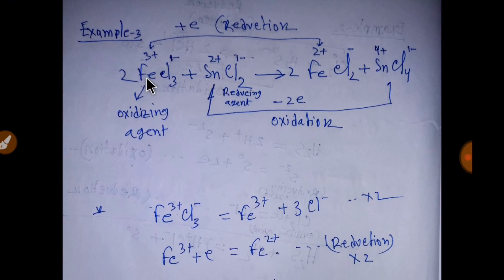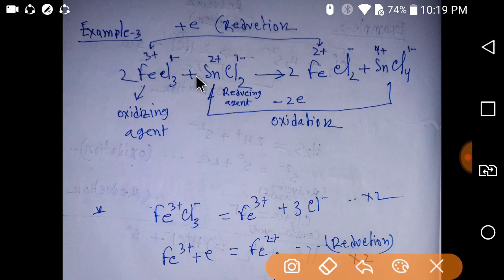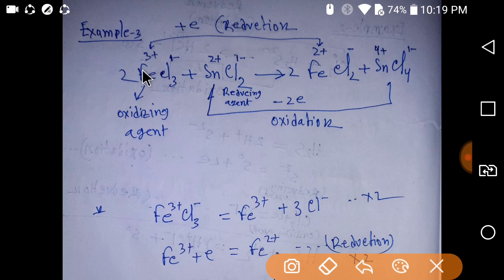This is our third example: ferric chloride and stannous chloride react to give ferrous chloride and stannic chloride. The oxidation state of iron is 3+ here but 2+ in the product — an electron is gained — so this is a reduction process and ferric ion is the oxidizing agent. The oxidation state of tin is 2+ here but 4+ in the product — two electrons are lost — so this is an oxidation process and tin is the reducing agent.